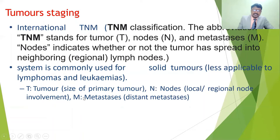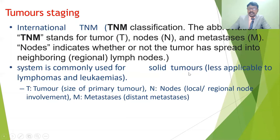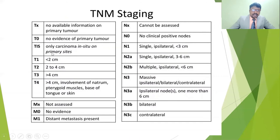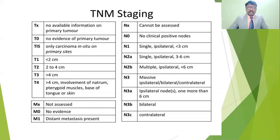For the T category: TX means no available information on the primary tumor; T0 means no evidence of a primary tumor; TIS means carcinoma in situ at the primary site. T1 means the tumor is less than 2 centimeters; T2 is more than 2 to 4 centimeters; T3 is more than 4 centimeters.